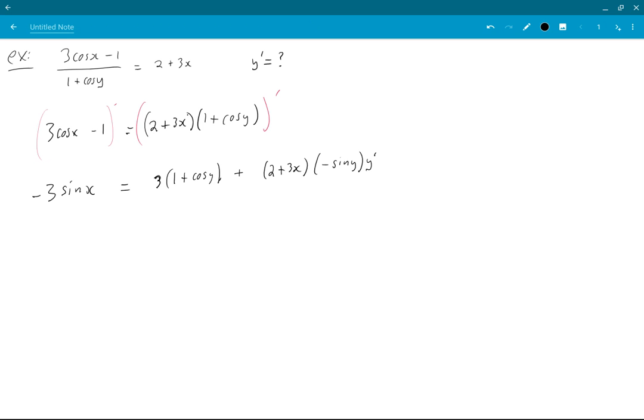Okay, so I have just the 1 y prime term. So I'll leave it where it is. Minus 3 sin x. Minus 3, 1 plus cos y is equal to...